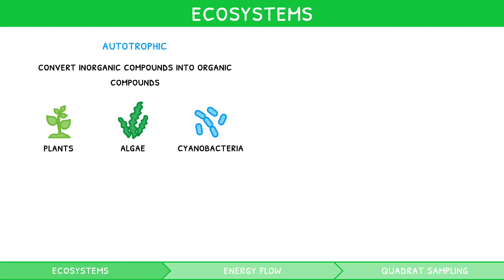However, as with most of the IB syllabus, there are exceptions. For example, some species of algae are parasitic heterotrophs, which feed off other organisms.